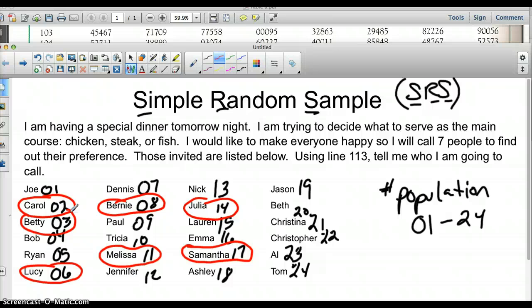Remember, you have to number them based on how many people you have to choose from. You then have to go to Table B and group your digits using whatever line number the problem told you. That's why I used line 113. Then you have to go in and group the numbers. Any numbers that repeat you have to skip and ignore. Any numbers that you can't use because they're not part of the 01 to 24, or whatever it is that you have, you ignore. You keep going until you get however many you're asked to do.